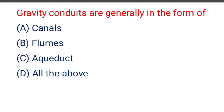Next question: gravity conduits are generally in the form of — option A canals, option B flumes, option C aqueduct, option D all of the above. The correct answer is option D, all of the above.